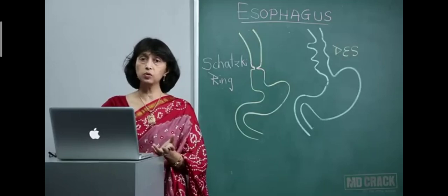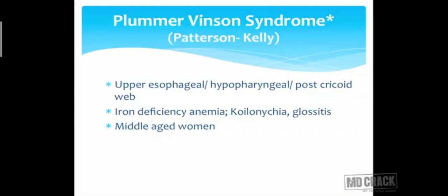Plummer-Vinson syndrome, originally called Patterson-Kelly syndrome, involves a web-like appearance in the upper esophagus — hypopharyngeal or post-cricoid region. Along with dysphagia, patients have iron deficiency anemia causing koilonychia and glossitis. It is often seen in middle-aged women presenting with anemia and dysphagia.